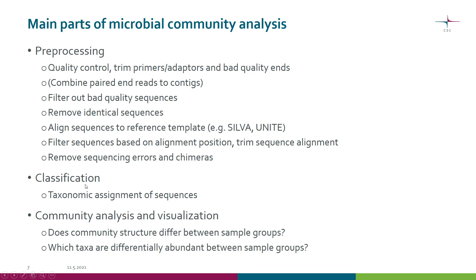When we classify, we essentially assign the sequences to taxonomies. Once that is done, we are ready for community analysis and visualization. This will involve data tidying, transformations, and so forth. Finally we can answer questions like: does the community structure differ between sample groups? Which groups are different? And which taxa are differentially abundant between sample groups?